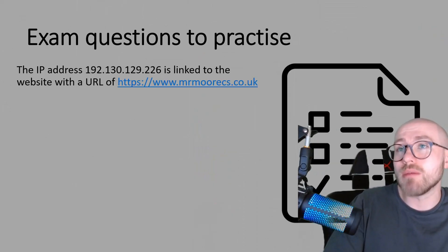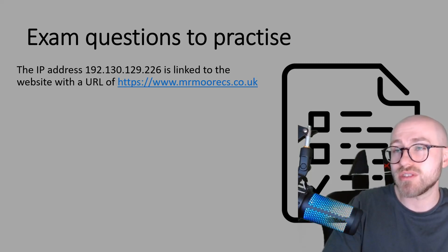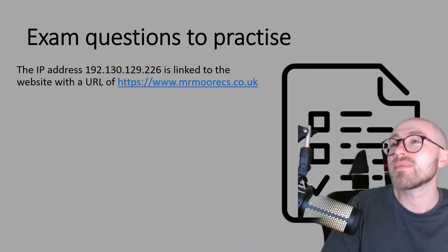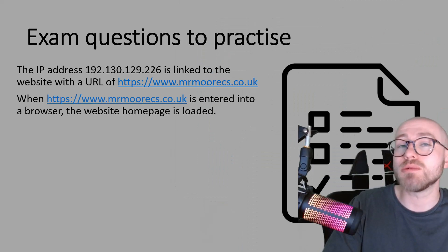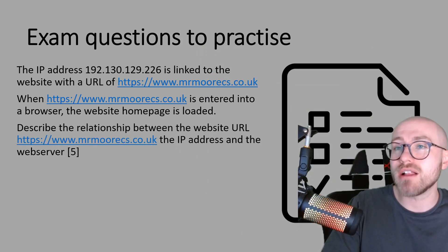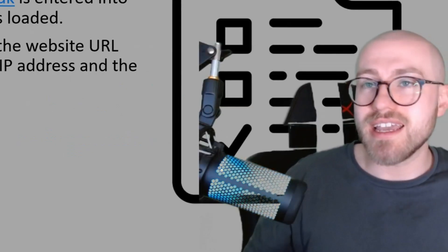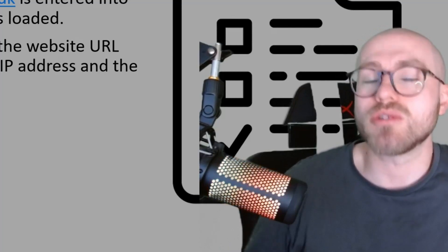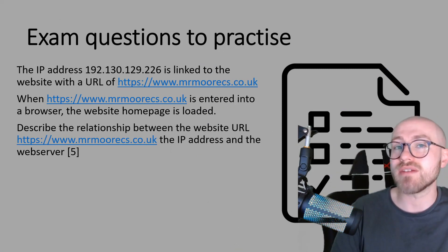Here's an example exam question about DNS where it doesn't actually use the word DNS in the question itself. The IP address 192.130.129.226 is linked to the website with the URL of MrMooreCS.co.uk. When MrMooreCS.co.uk is entered into a browser, the website homepage is loaded. Describe the relationship between the website URL MrMooreCS.co.uk, the IP address, and the web server. As you can see, it's talking about the process of DNS without using the word DNS — you need to recognize that and relay the steps from the previous slide.